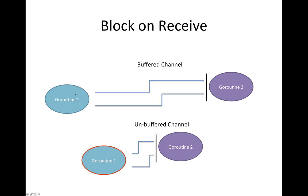With a buffered channel, if goroutine1 is very busy and hasn't gotten around to sending any data, the channel is empty. When goroutine2 tries to read a value, there's nothing there, so it blocks — it gets suspended until data arrives, and Go takes care of resuming it. The same applies to unbuffered channels: if the sending routine isn't available, goroutine2 trying to read will also be blocked.